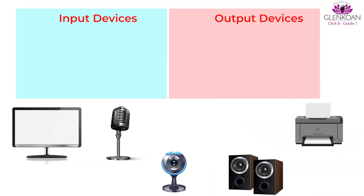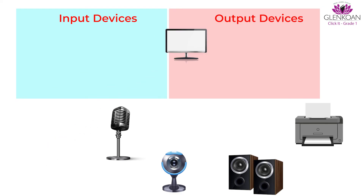Let's play a game now. We can see all these devices here — let's put them in their correct boxes. The first one is a monitor. We can see our results on it, hence this is an output device. The next one is a microphone. We record our voice using this, which means we are giving it instructions, so it is an input device.